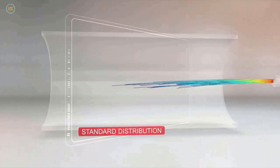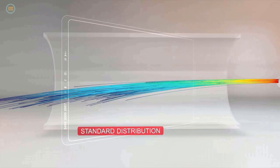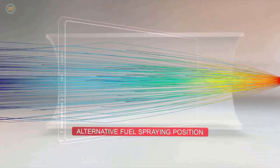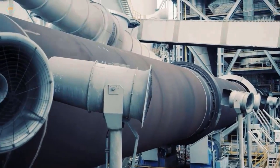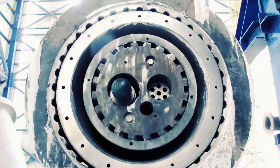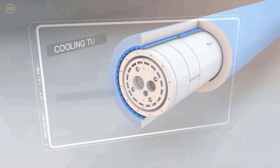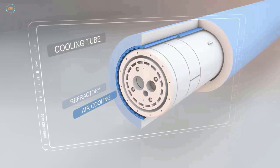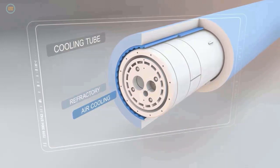The swirl air guarantees fast ignition and efficient combustion of the fuel. Due to the adjustable swirl system, alternative fuels are better distributed in the flame core. The spraying position of the swirl element ensures efficient distribution and complete combustion of the fuel particles. PyroJets are extremely reliable due to their sturdy design. The castable cooling tube is highly resistant against heat and dust in case of refractory failure, giving extra protection for the burner tip. The fins at the cooling tube increase the heat exchange between cooling air and refractory.